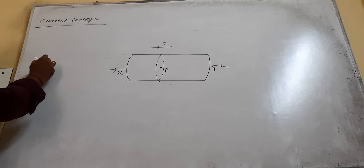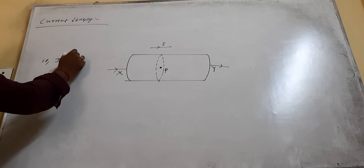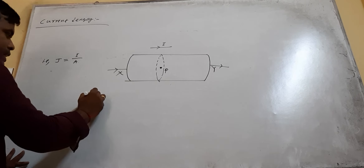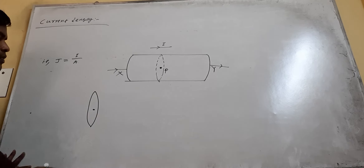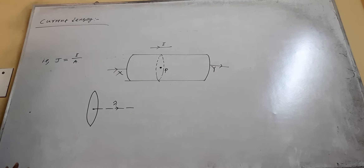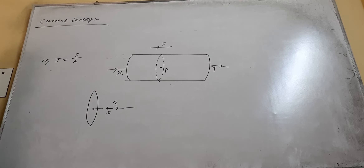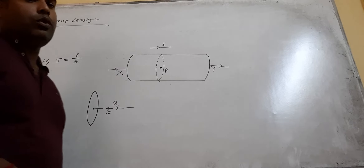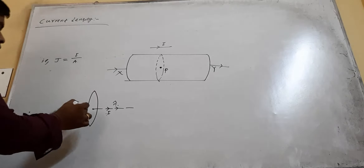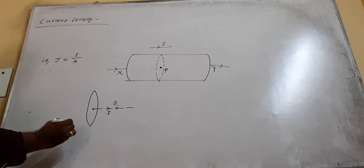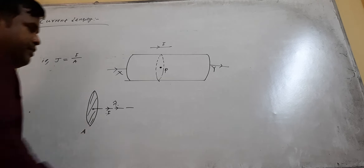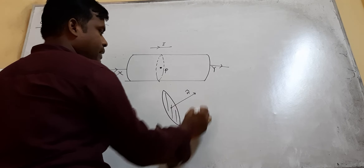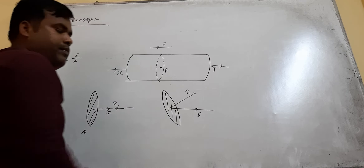If I want to find current density at point P, I see what current flows through unit area at P, provided the area is normal to the direction of current flow. Current density is represented by J, equal to I by A, when A is normal to the flow of current. The area vector is parallel to the direction of flow of current when the area surface is perpendicular to it.